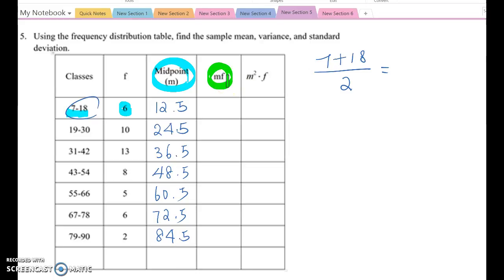If you multiply the midpoint and frequency, the first class case, 12.5 times 6, then you will get 75 here.